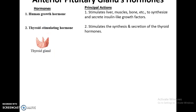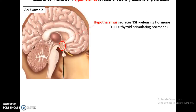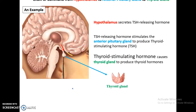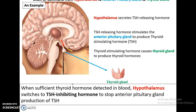Thyroid stimulating hormone stimulates the thyroid gland to secrete hormones. For instance, the hypothalamus releases thyroid stimulating hormone releasing hormone, which goes to the anterior pituitary gland causing it to produce the thyroid stimulating hormone. This then goes to the thyroid gland through the bloodstream, causing it to produce thyroid hormones. When sufficient thyroid hormones are detected in the bloodstream, the hypothalamus will switch to releasing TSH inhibiting hormones, stopping the pituitary gland from stimulating the thyroid gland.